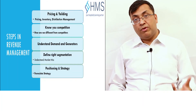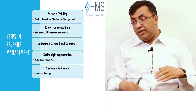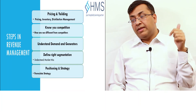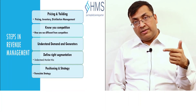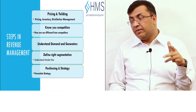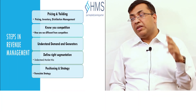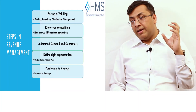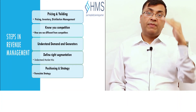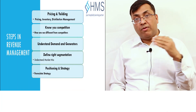Lastly, we do the pricing and yielding — what is the price we want to charge and what is the yield we want to create among customers. So these are the five steps: first, positioning and strategy; second, right segmentation; third, understanding the demand and generators; fourth, know your competition; fifth, pricing and yielding the property. We are going to be learning these one by one.